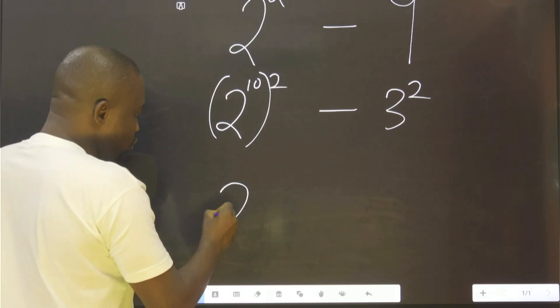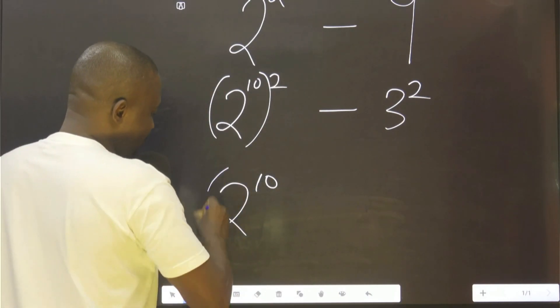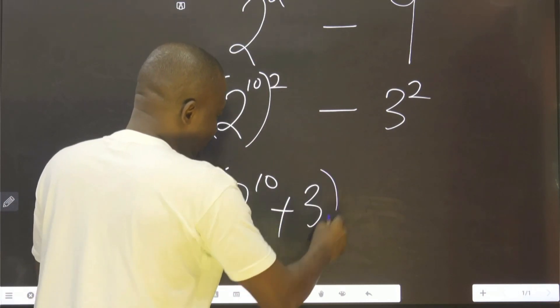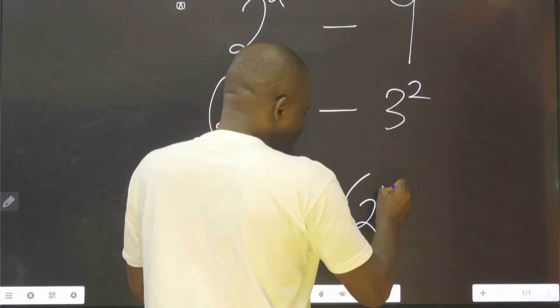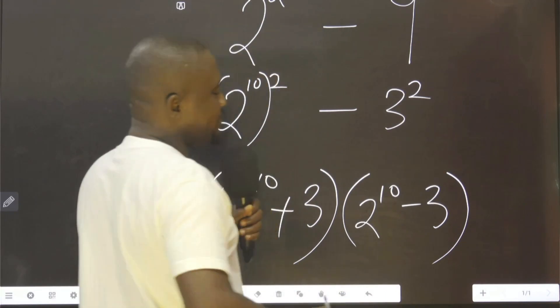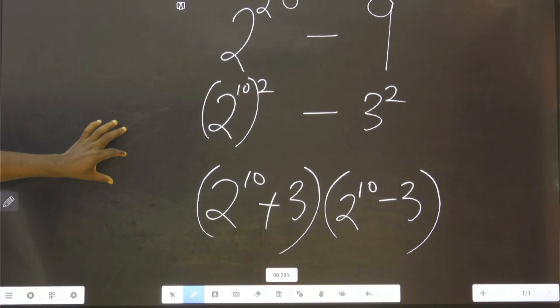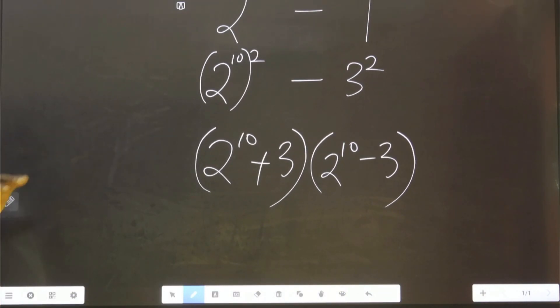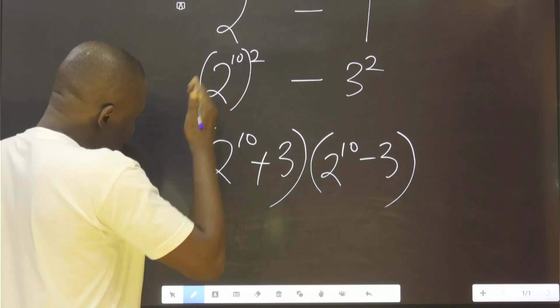So with this now I have something like this. So I can now come here to say (2^10 + 3)(2^10 - 3). So with this now I am good to go. How do I work on this?